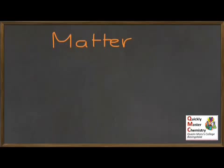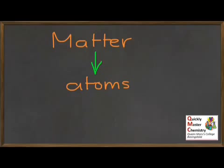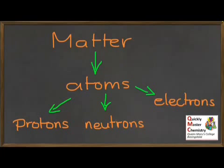Before we go any further we should briefly discuss what we actually mean by atoms. If we look at the world — in fact the universe around us — we find it to be made of matter: the stuff that we can see and touch and feel, all the different materials with all their different properties. To a chemist, atoms are simply the very basic building block that matter is made out of. We find just over about 100 different naturally occurring types of atom, and what makes one atom different from another is simply the number of the subatomic particles that it's made out of.